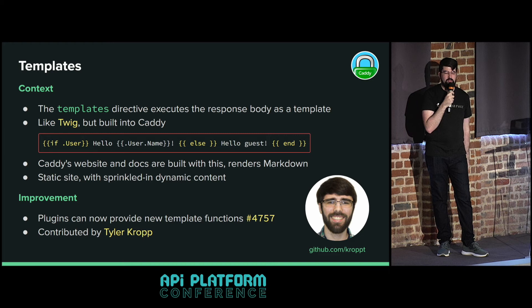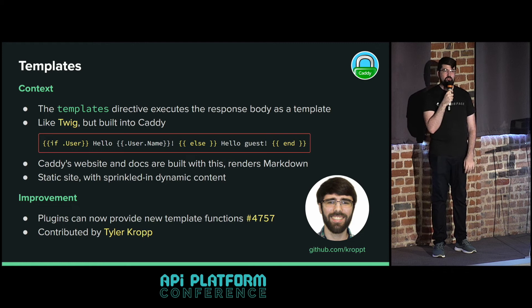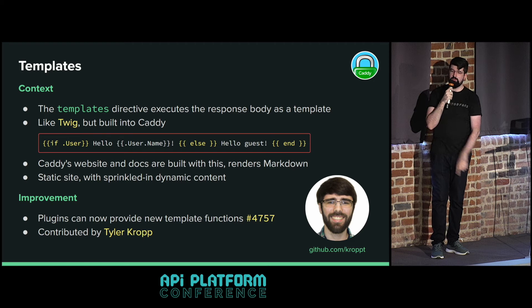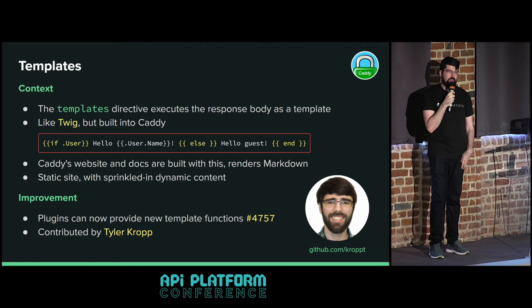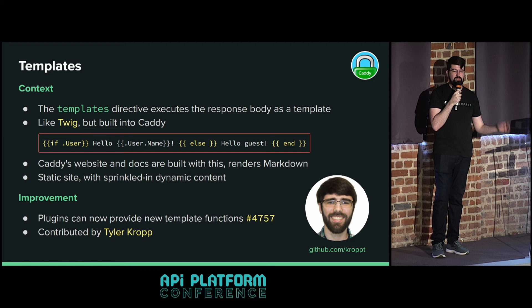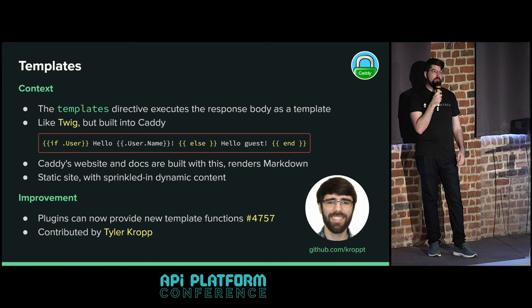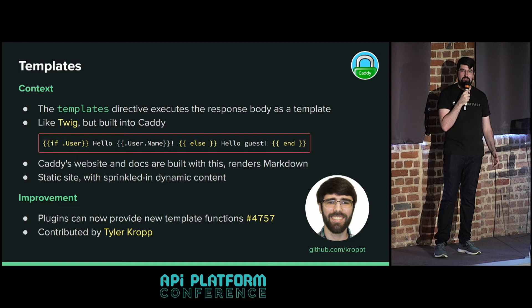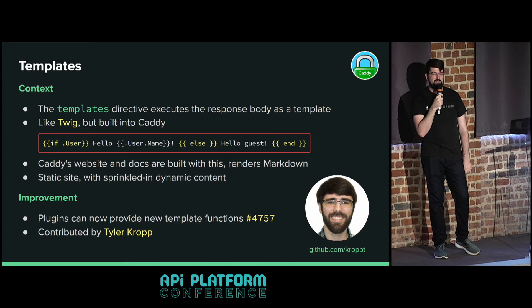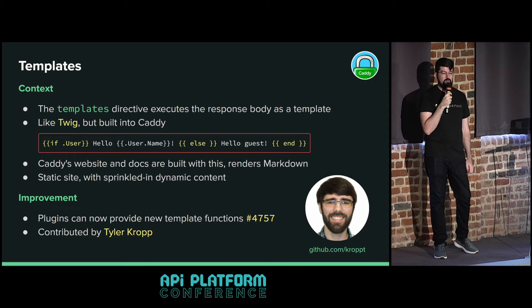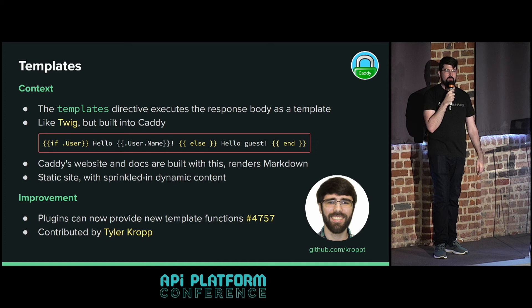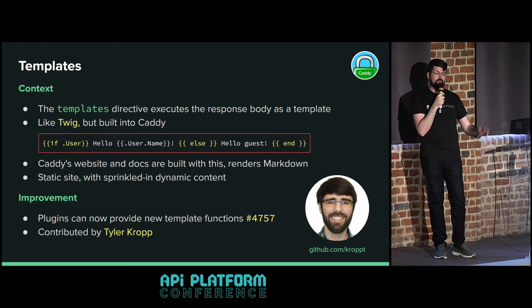Caddy has a templates directive that executes the response body as a template - kind of like Twig, but built into Caddy. For example, a basic template can conditionally show 'hello, username' or 'hello, guest'. Caddy's own website and documentation are built with this templating functionality. There's also a built-in markdown function, so you can render markdown dynamically on each request without pre-rendering to HTML. This allows you to have a static site with sprinkled-in dynamic content. The improvement here is that plugins can now provide new template functions, making the possibilities endless. This was contributed by Tyler Crop.